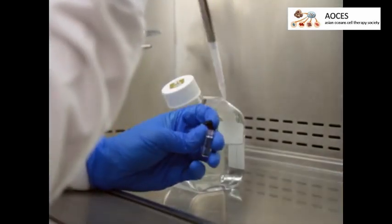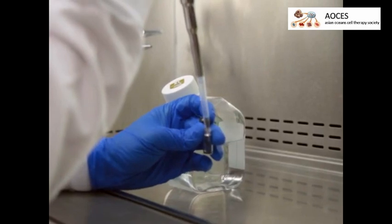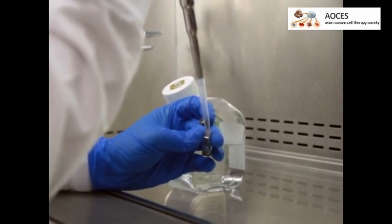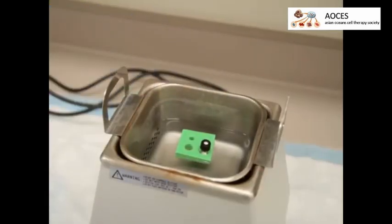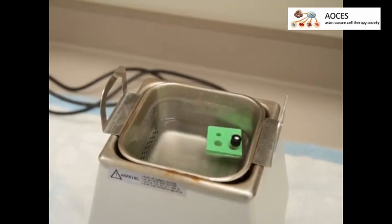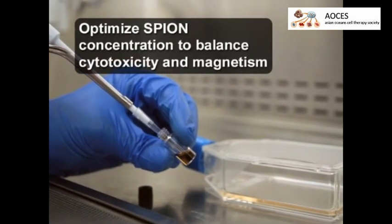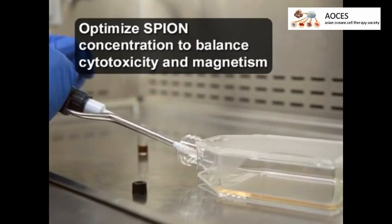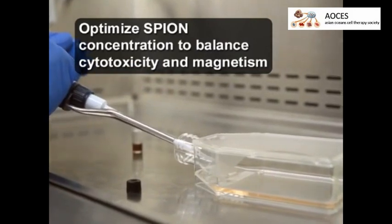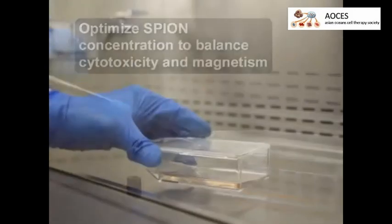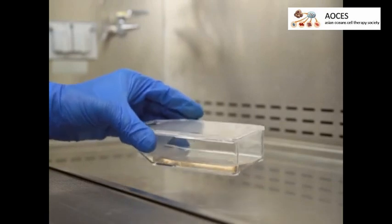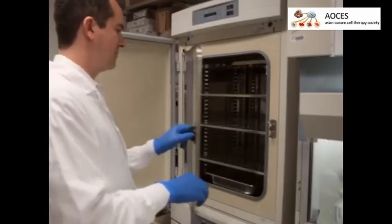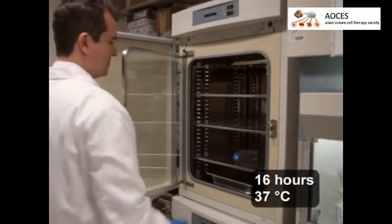To prepare for cell labeling, first suspend spions in PBS at a concentration of 40 milligrams per milliliter and sonicate them for 30 minutes. Next, add the solution to a flask of nearly confluent cells at a concentration of 5 microliters per milliliter of cell culture medium. Rock the flask to evenly distribute the spions. Incubate the cells for 16 hours at 37 degrees Celsius.